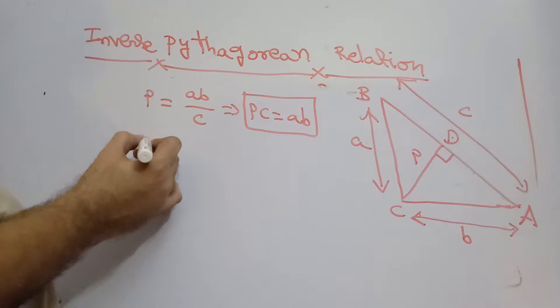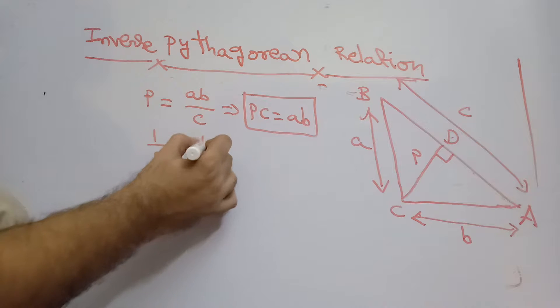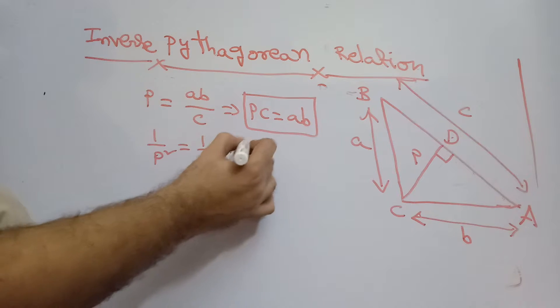The other relationship what I can write is that 1 by P square equals 1 by A square plus 1 by B square.